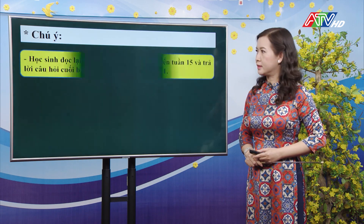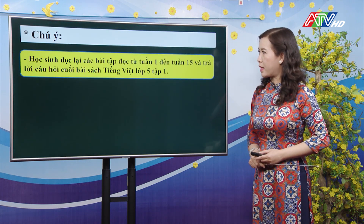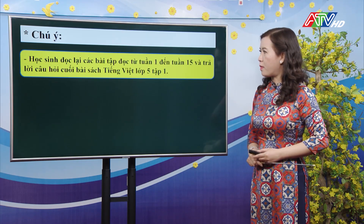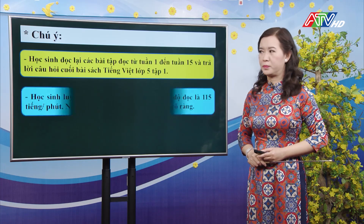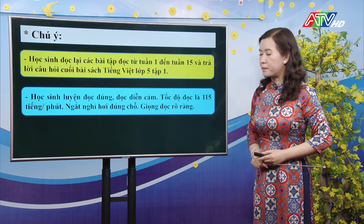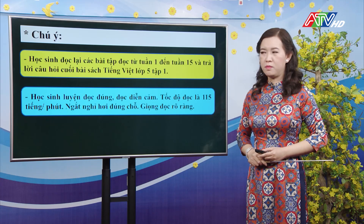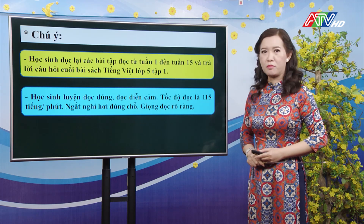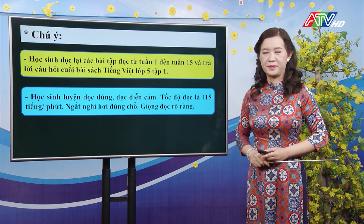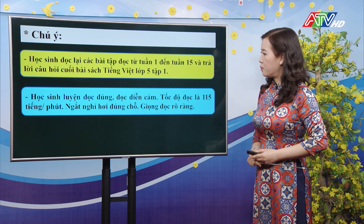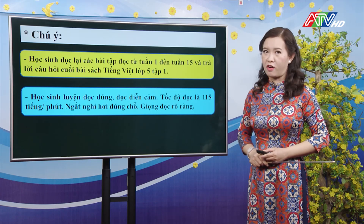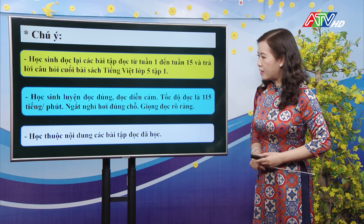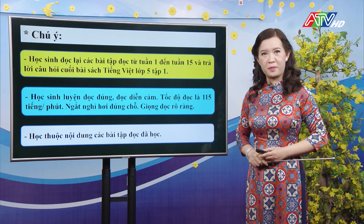Các con lưu ý: sẽ đọc lại các bài tập đọc từ tuần 1 đến tuần 15 và trả lời câu hỏi cuối bài ở sách tiếng Việt lớp 5 tập 1. Trong khi luyện đọc, các con luyện đọc đúng, luyện đọc diễn cảm và tốc độ đọc là 115 tiếng trên 1 phút là đạt yêu cầu. Các con nhớ ngắt nghỉ hơi đúng chỗ, giọng đọc rõ ràng, và học thuộc nội dung các bài tập đọc đã học.